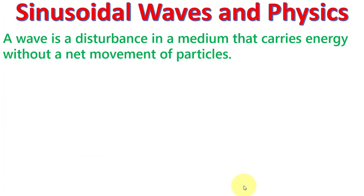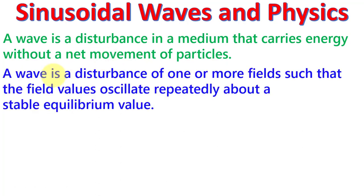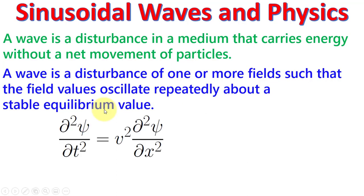There are many definitions of a wave. A wave is actually a disturbance in a medium that carries energy without a net movement of particles. We can also define it as a disturbance of one or more fields such that the field values oscillate repeatedly about a stable equilibrium. This is the wave equation, in which a function depending on space and time has its double derivative with respect to time equal to its double derivative with respect to space, with a constant of proportionality V squared.